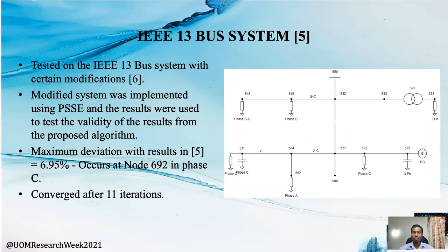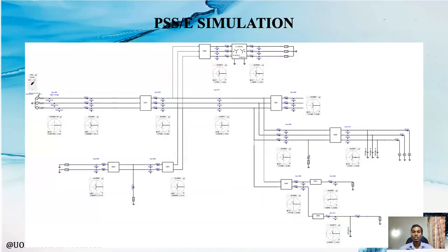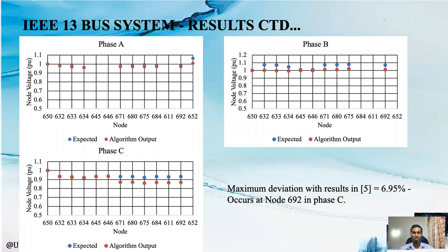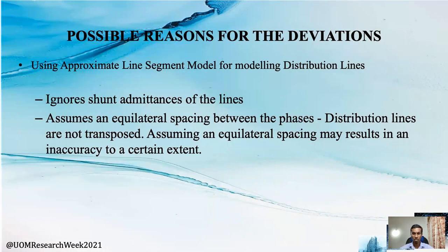The IEEE 13-bus system with certain modifications according to reference 6 was used to test the overall algorithm. The modified system was implemented using PSS/E and the results were used to validate the algorithm. The solution converged after 11 iterations with a maximum deviation of 6.95%. This is the system implemented in PSS/E, and these are the results obtained for each node and phase, along with a graphical comparison of the three phases. The algorithm output matched with the expected results.